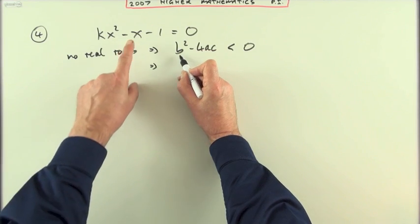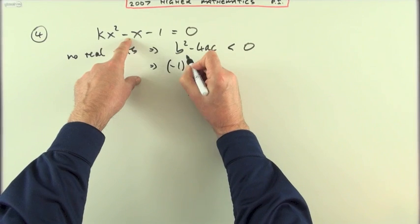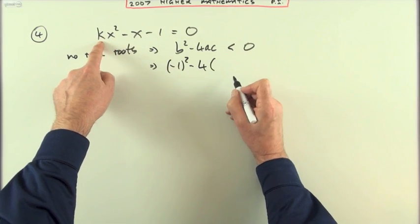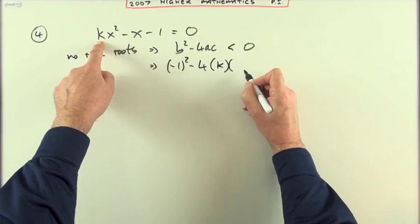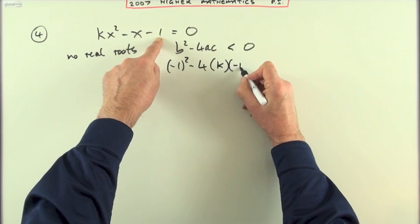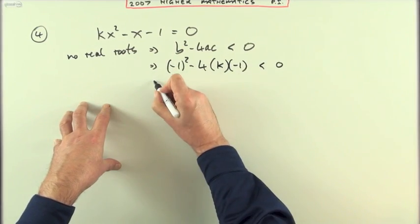So b means the coefficient of x which is negative one. So that's a negative one squared minus four times a, the coefficient of x squared which is k, and c means anything else that's left over, the constant at the end which is negative one. That has to be less than zero.